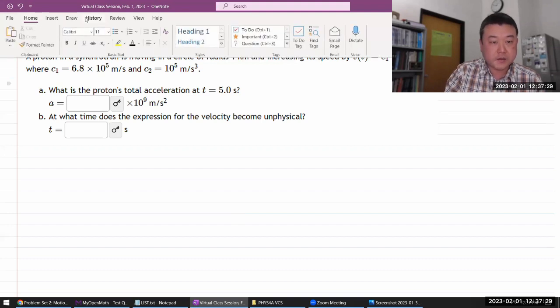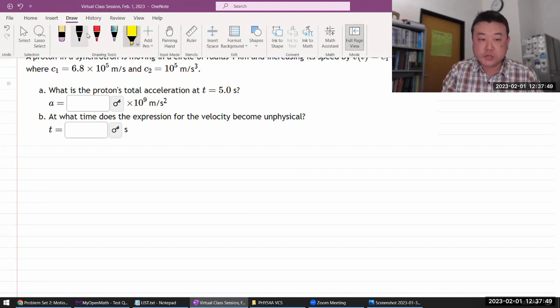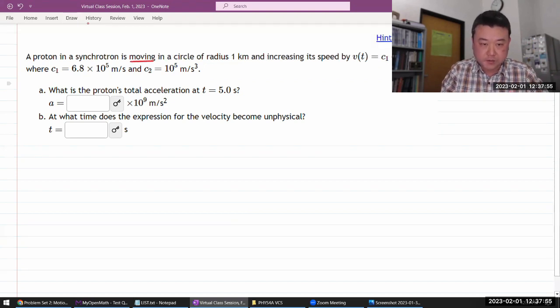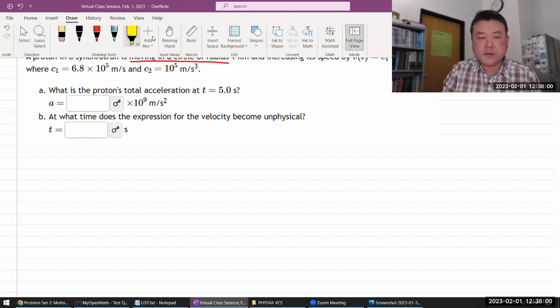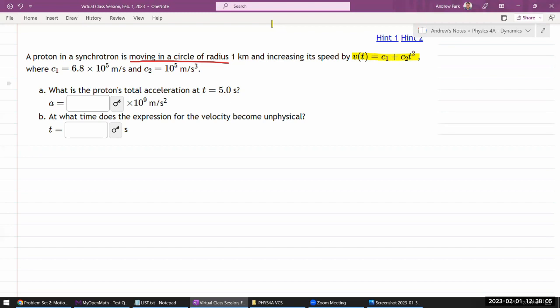It says that a proton in a synchrotron is moving in a circle. This is actually important. I'll come back to that in a bit. It's moving in a circle. And it's giving me this information about how its speed is changing as a function of time with some coefficients and all that.